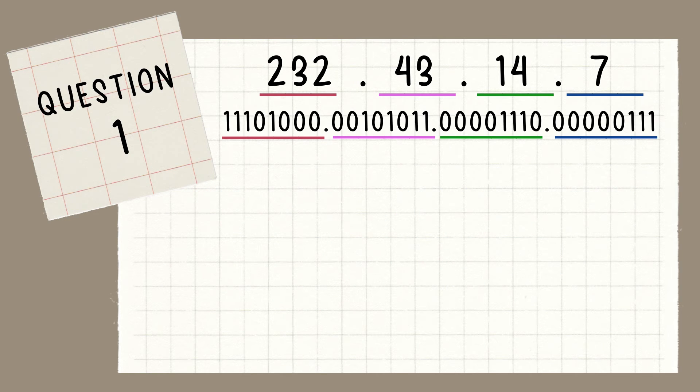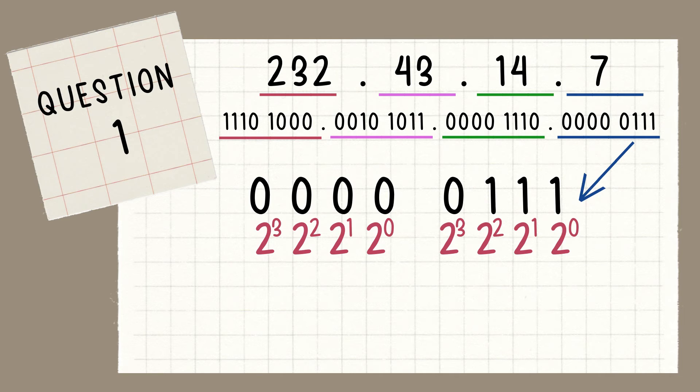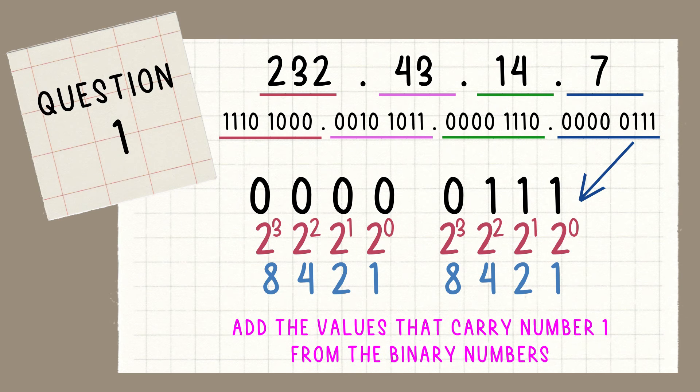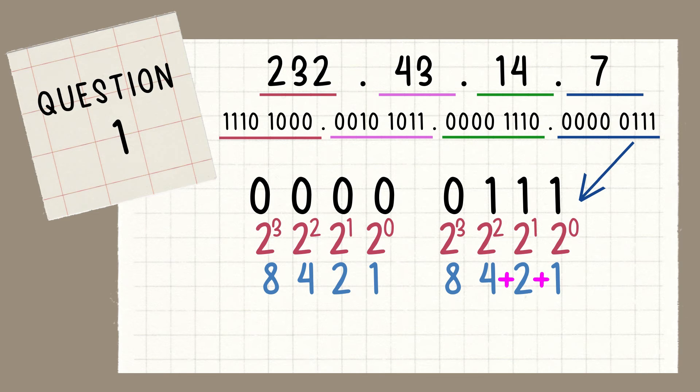Now, convert the binary number into the hex value. First, spread the binary numbers into a group of 4 digits. We need to multiply the 1 by 2 to the 0 power, and then the second one by 2 to the first power, then 2 square, then 2 to the third power. 2 to the third power is 8, 2 square is 4, 2 to the first power is 2, and 2 to the zero power is 1. Basically, we just need to add this number because they carry a 1 with them, so 4 plus 2 plus 1 is 7.